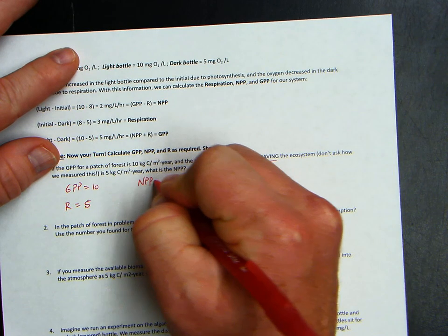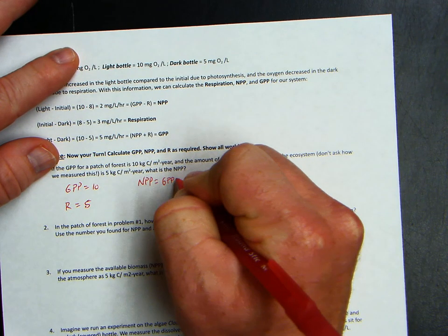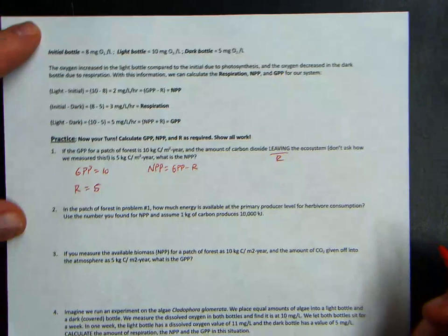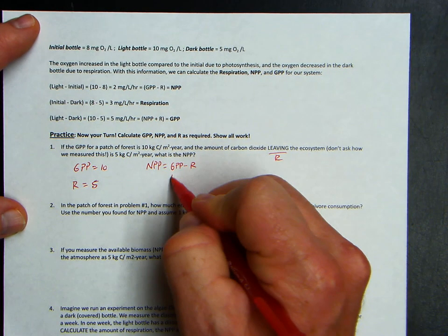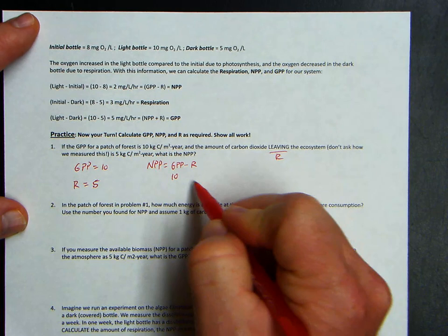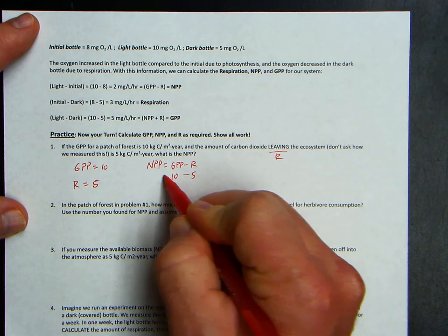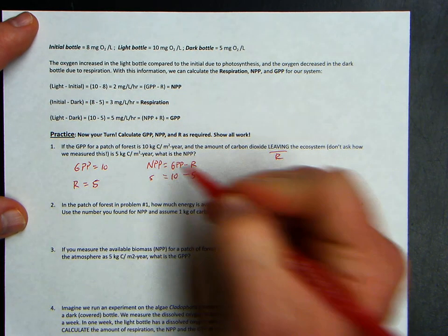So NPP equals GPP minus R. Just plug and play. Put some numbers in. So GPP, 10. Respiration, 5. NPP would be 5.